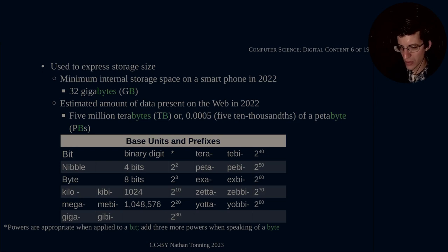And here's a little table here to show us the basic units and the prefixes. So a bit is a binary digit. And it is two to the zero, because two to the one would be two. So that'd be two bits. So a bit is two to the zero.